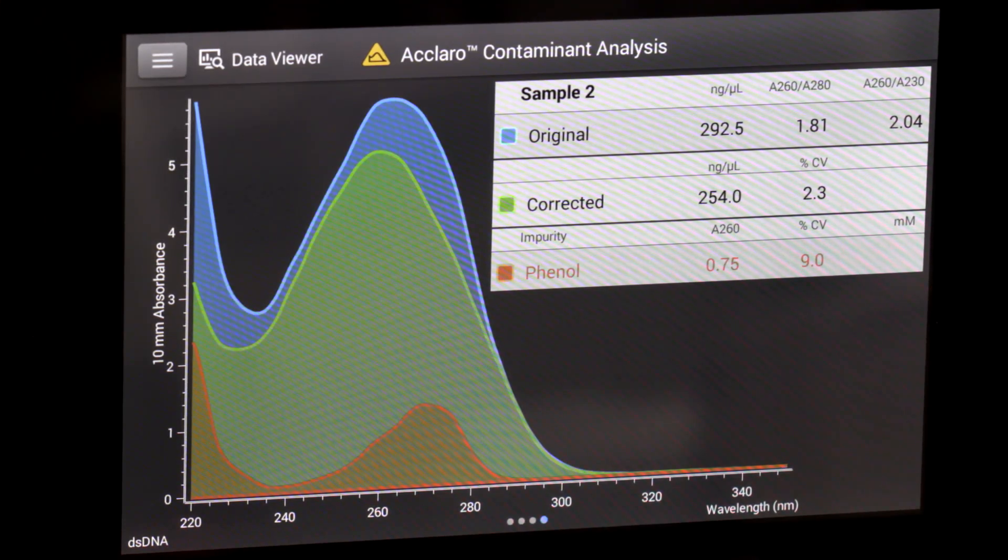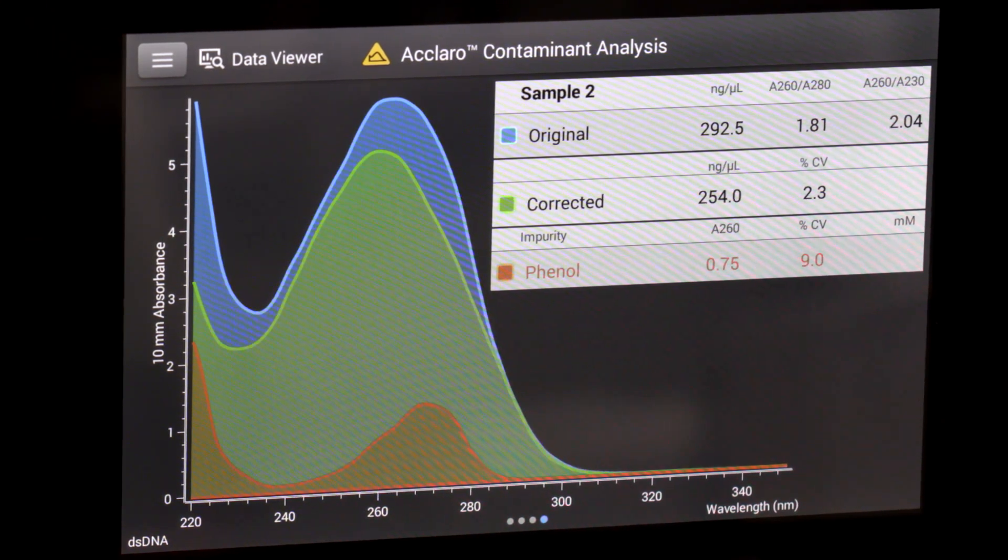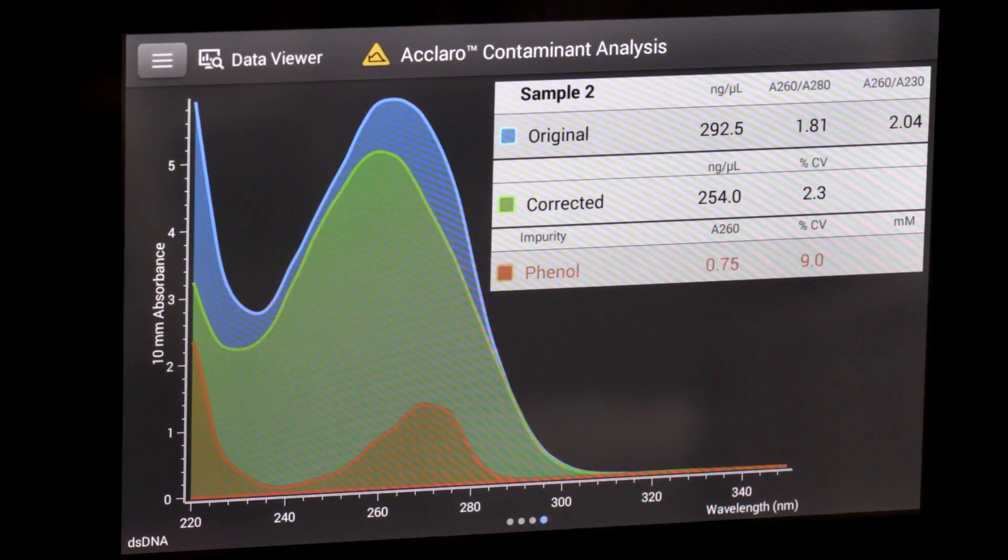We use chemometrics to take the whole spectrum and break it into its constituent parts. Some contaminants, such as phenol, absorb light at 260 nm, the same wavelength as nucleic acids.